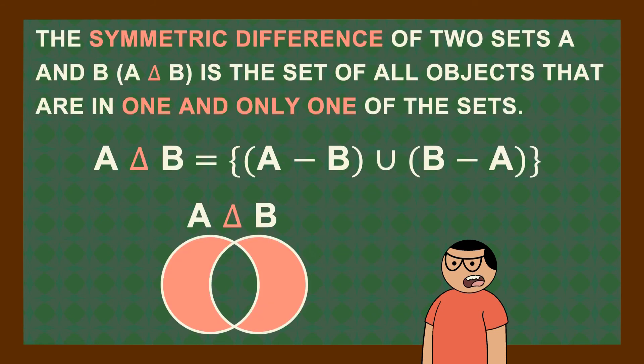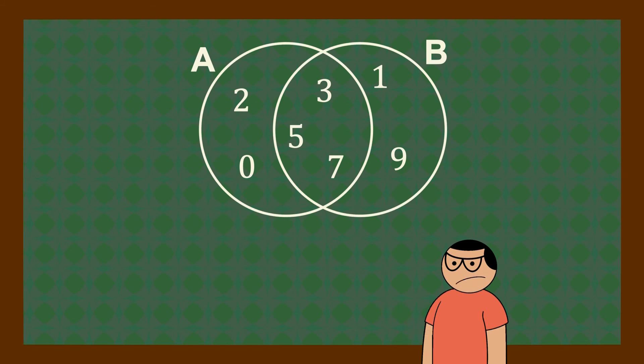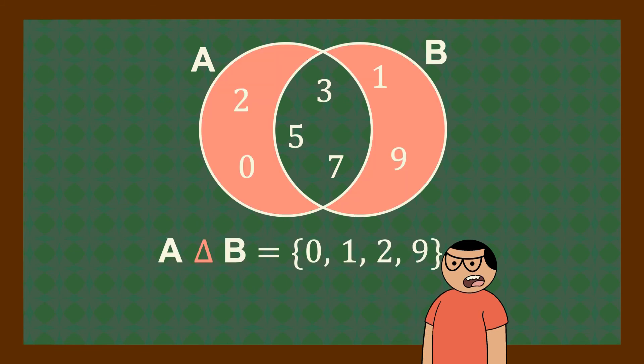The symmetric difference of two sets A and B is the set of all objects that are in one and only one of the sets. It is the union of the differences of two sets. From the sets here, the symmetric difference of A and B is 0, 1, 2, 9.